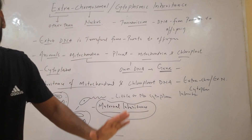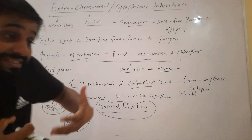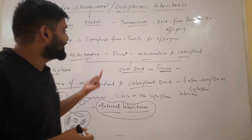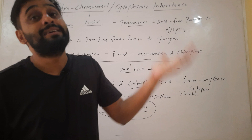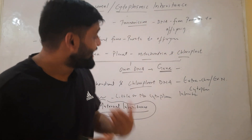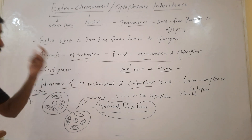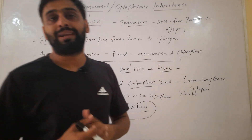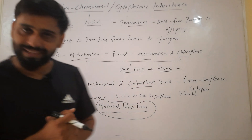Extra means other than chromosomes, and we know that chromosomes are present in the nucleus. This extra DNA is present in mitochondria, and in the case of plant cells it is present in mitochondria as well as chloroplast. These organelles are present in the cytoplasm, which is why it is called cytoplasmic inheritance. So the inheritance of chloroplast and mitochondrial DNA is called extra chromosomal inheritance, and it is mostly maternal.